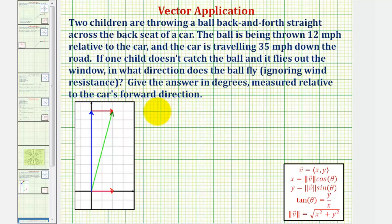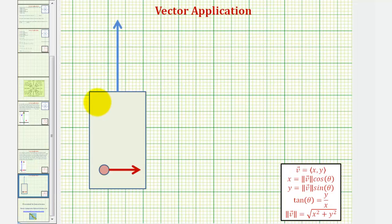To better understand what's happening here, if we think of this rectangle as the car, it's moving in this direction at 35 miles per hour, and the children are throwing a ball back and forth straight across the back seat at 12 miles per hour. Let's assume the ball is moving from left to right as it flies out the window. We'll model the speed and direction of the car using a vector, and the speed and direction of the ball with another vector.